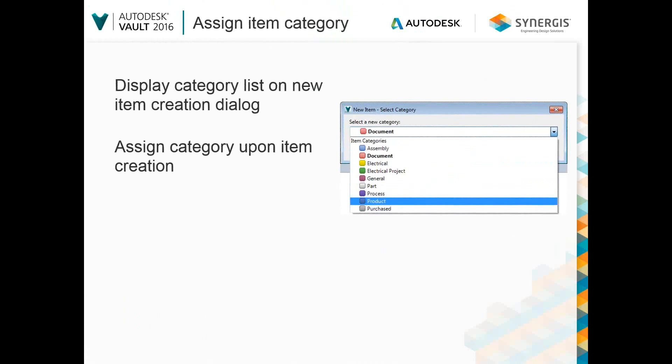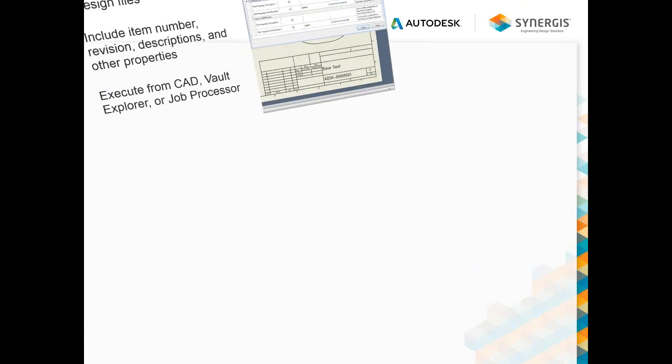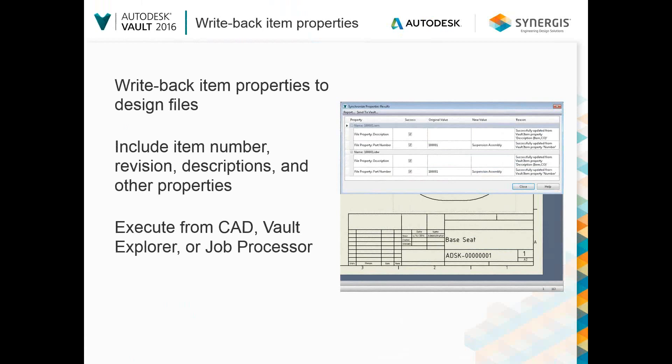You can now assign an item to a category on creation, and you can still have predefined rules to assign a category. Administrators can designate which categories can be selected for creation. In direct response to a customer request, you can now use the Vault CAD add-ins, Vault Explorer, or the Job Processor to map and write back item properties directly to the CAD files, and see the details for clearer and more accurate design documentation.